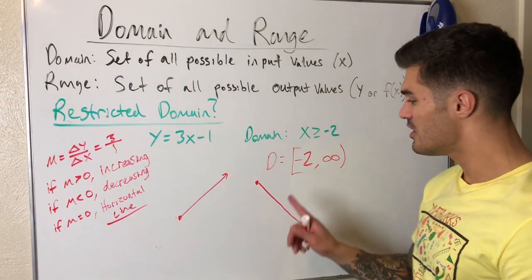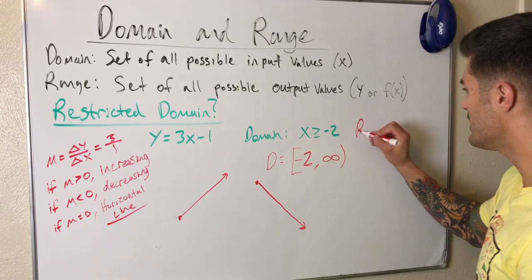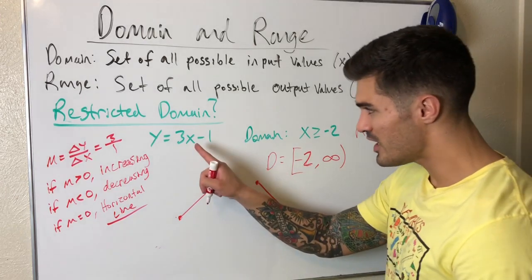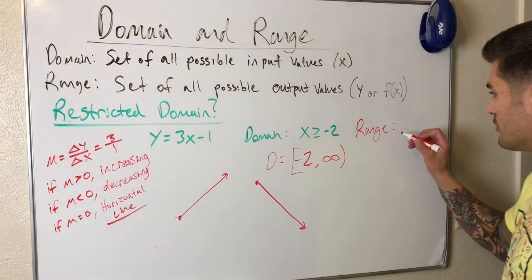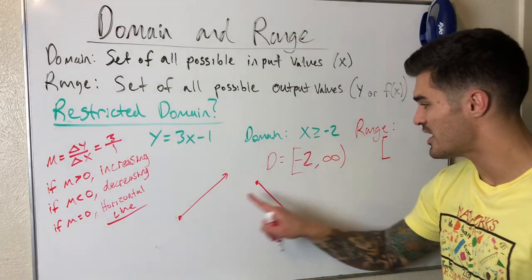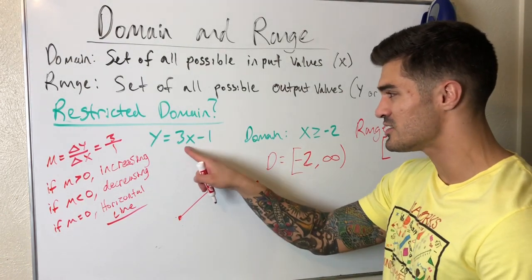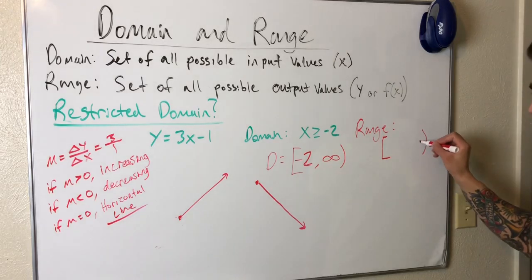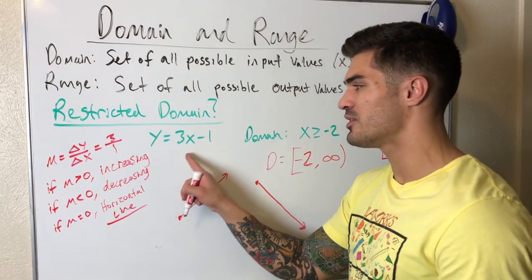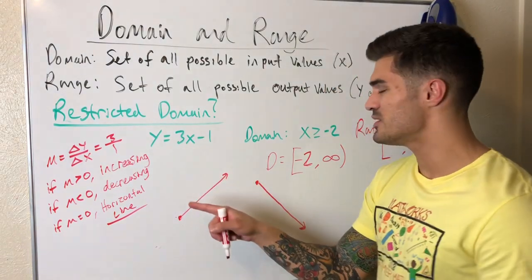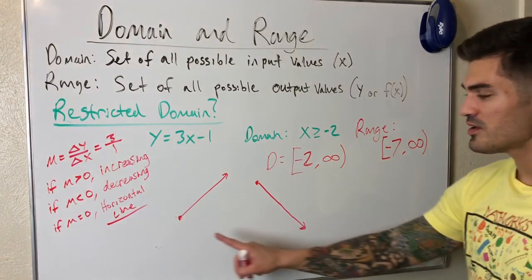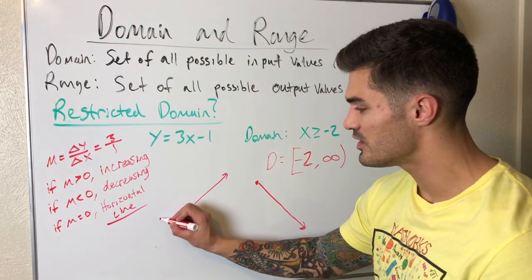Since our function is increasing, the range is going to be an interval starting at whatever happens when I plug in negative 2 and ending at infinity. We include that point — it's f(negative 2). So I plug in negative 2: three times negative 2 is negative 6, minus 1 is negative 7. Our range starts at negative 7.